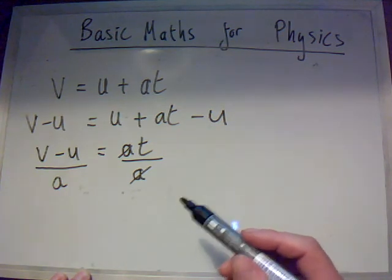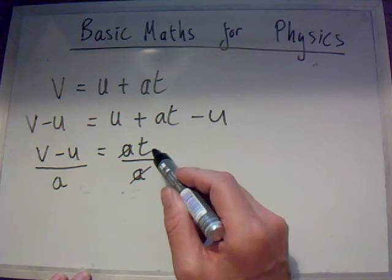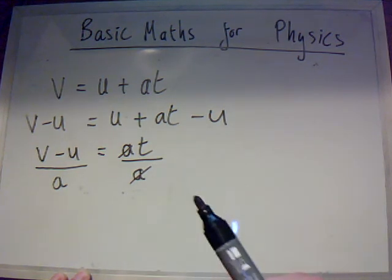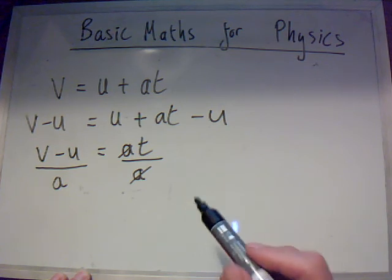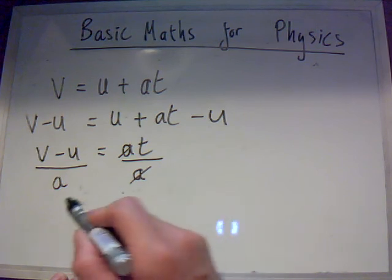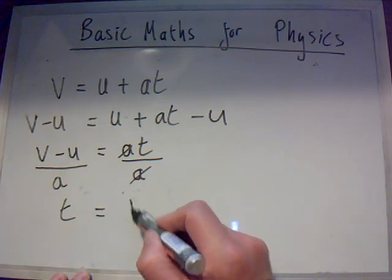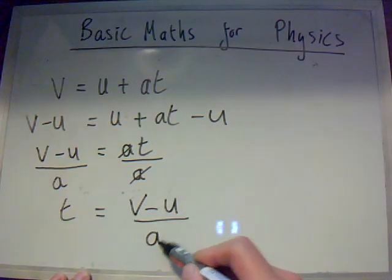Now, normally we write it so that the letter, the symbol we're looking for, is on the left-hand side because we always read in many countries, including England, from left to right. So therefore, we write the final answer as T equals V minus U divided by A.